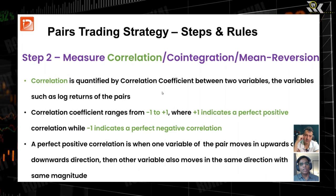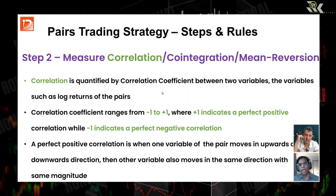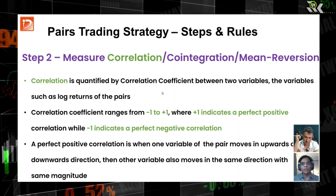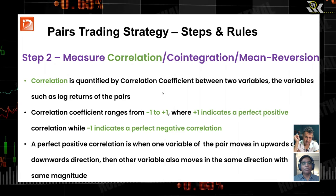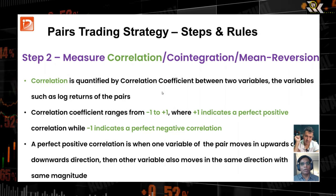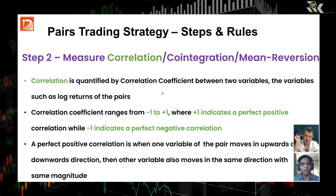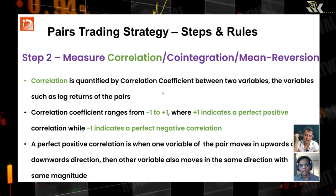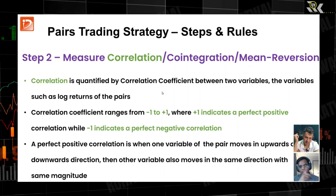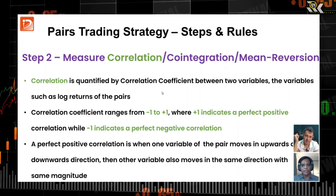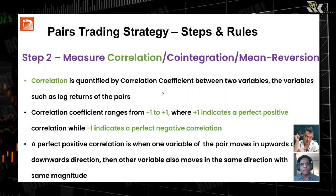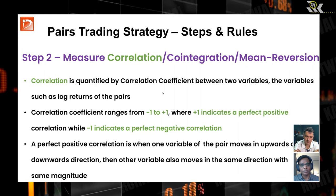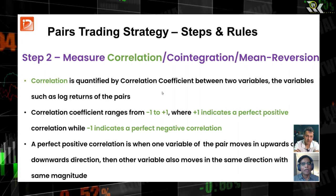The correlation coefficient ranges from minus one to plus one, or minus 100% to plus 100%. Plus one, or plus 100%, indicates a perfect positive correlation, while minus one, or minus 100%, indicates a perfect negative correlation. A perfect positive correlation means when one variable moves up or down, the other also moves in the same direction with the same magnitude — they are in step with each other.